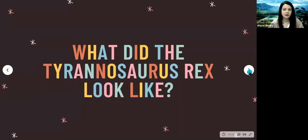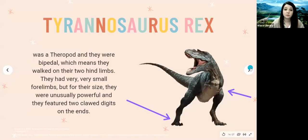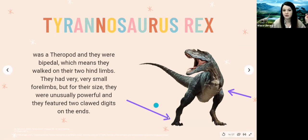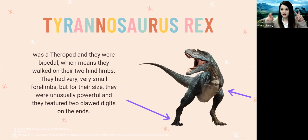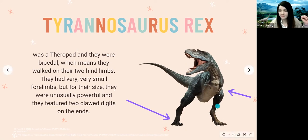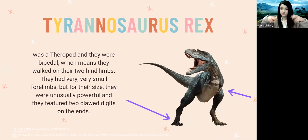What did the Tyrannosaurus rex look like? T-Rex was a theropod and was bipedal, meaning it walked on its two hind limbs. They had really tiny forelimbs — very short arms — but with two fingers tipped with super sharp and powerful claws. They had really powerful muscular hind legs and very small forearms, but those forearms were so powerful they could actually rip into food. They were super powerful and really sharp.